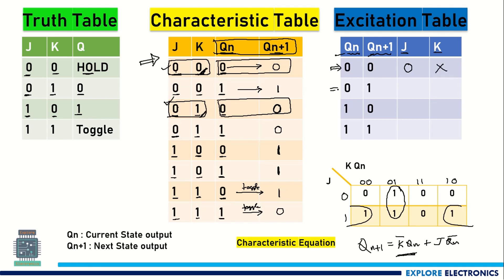Now let us take the next case: when Qn is 0 and Qn+1 is 1. The relevant rows here are where Qn=0, Qn+1=1, and also this 0,1 case.